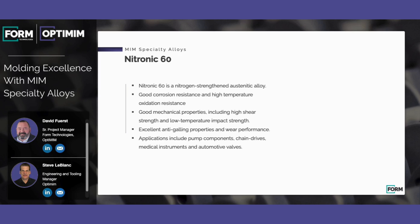The next alloy is nitronic 60. This is a nitrogen-strengthened austenitic steel, very similar to 300 series stainless steels. It has good corrosion resistance and high temperature oxidation resistance, as well as good mechanical properties including high shear strength and low temperature impact strength. Its mechanical properties are about double what you would find in 316, and most applications call for this alloy due to its excellent anti-galling properties and wear performance.